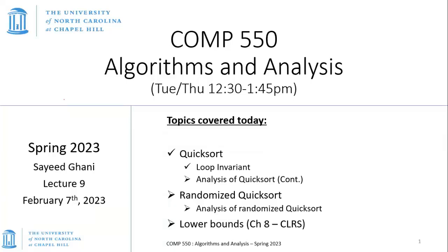In the last lecture, we were looking at quicksort. We looked at the loop invariant and started doing the analysis of quicksort. We'll continue with that, then do analysis for randomized quicksort, and then move on to chapter 8, hopefully before the end of the lecture.